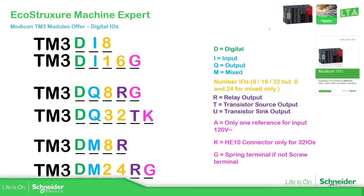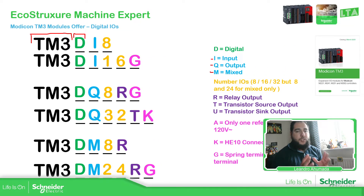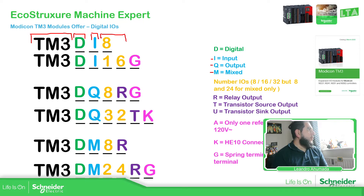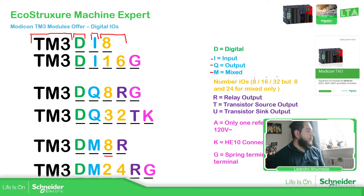Let's start with the digital IO modules. All the references start with TM3, followed by D for digital, and then depending on the characteristics: I for input, Q for output, and M for mixed. So we have the possibility to have a digital module with a mix of inputs and outputs. The yellow color in the catalog indicates the amount of IOs — you can see we have 8, 16, and 32. For the mixed modules you have 8 and 24. Take a look at the catalog to check the right reference.